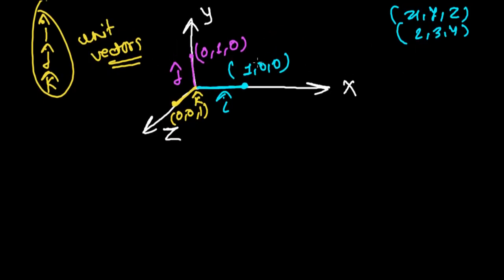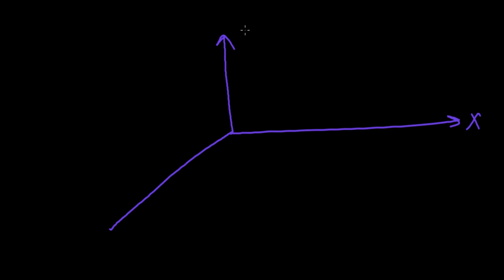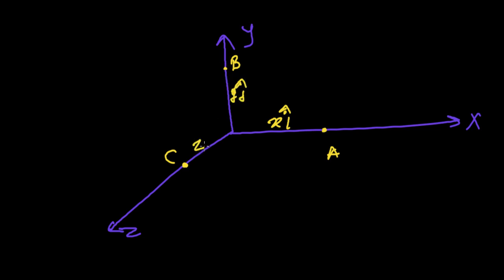Now let's learn about the components of a vector in three dimensions. Let's say this is the x-axis, this is the y-axis, and this is the z-axis. I have three points: point A, point B, and point C. The coordinate of point A is x î, point B is y ĵ, and point C is z k̂. The unit vectors î, ĵ, and k̂ give you the direction, while x, y, z represent the magnitude. Now I have a point P connected with the origin O, making a vector OP, and I want to find the x, y, and z components of this vector OP.